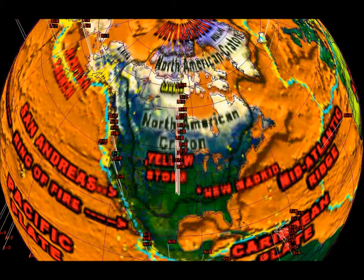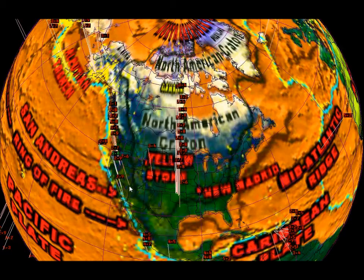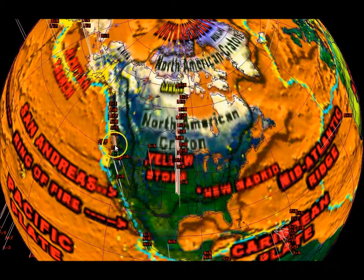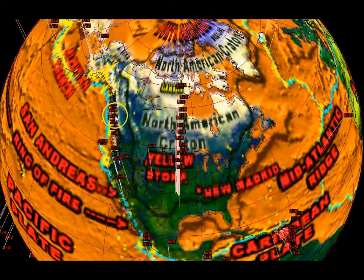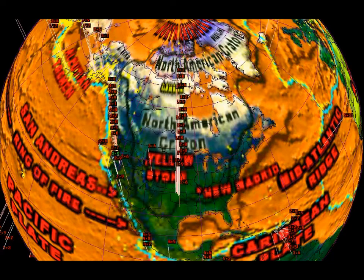Going back another day, there's one in southeastern Nevada at 2.6, and several more in northwest Oregon and southwest Washington. Quite a few there: 3.1, 2.8, 2.7, 4.0, 3.5, 2.9. Pretty significant activity there.